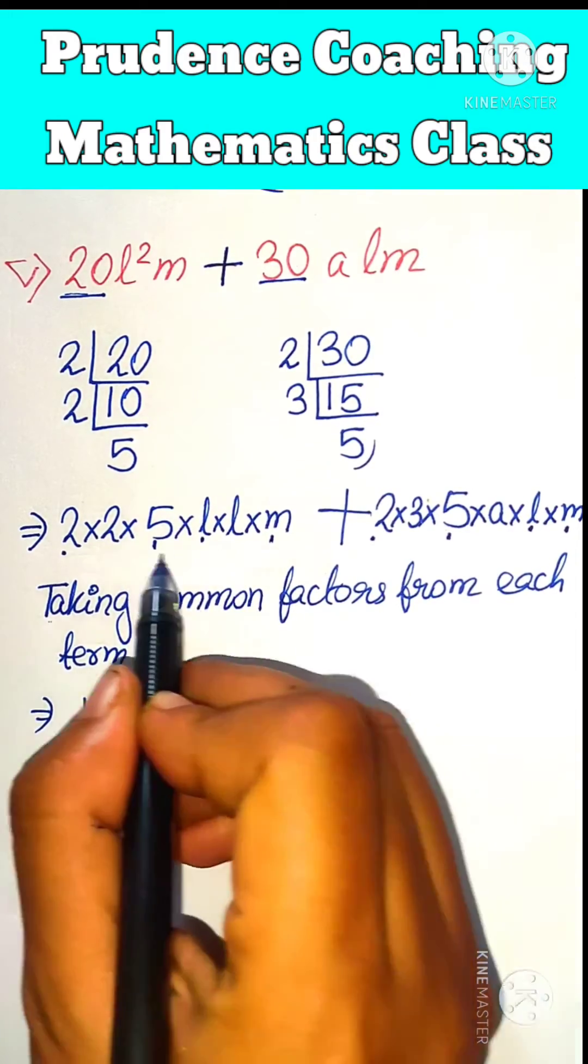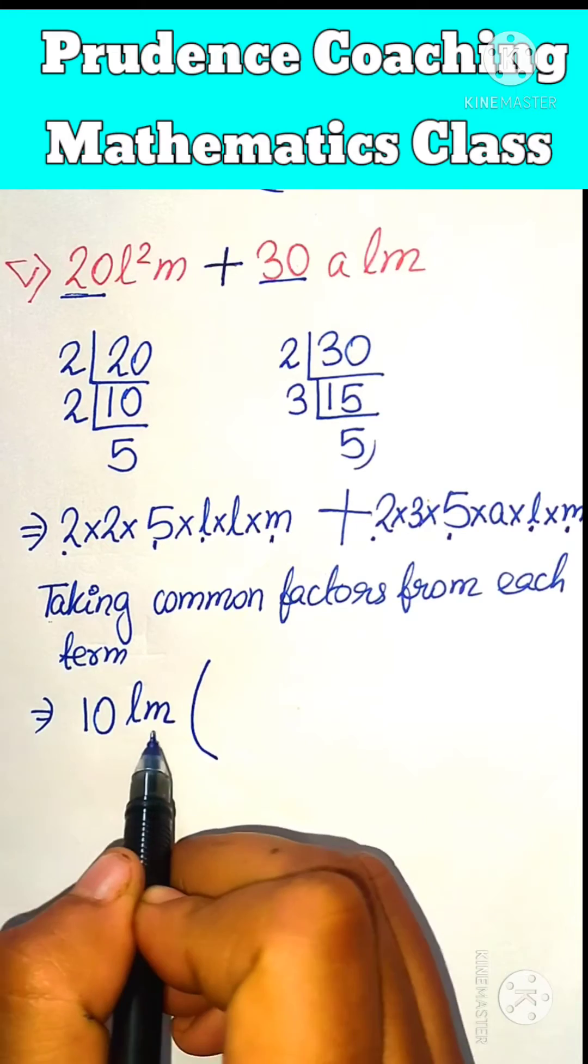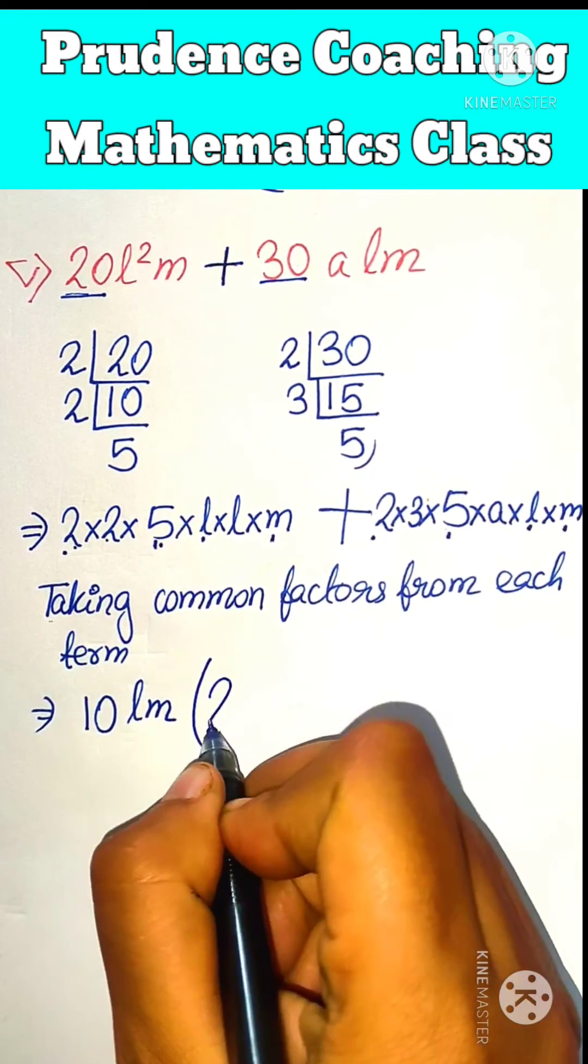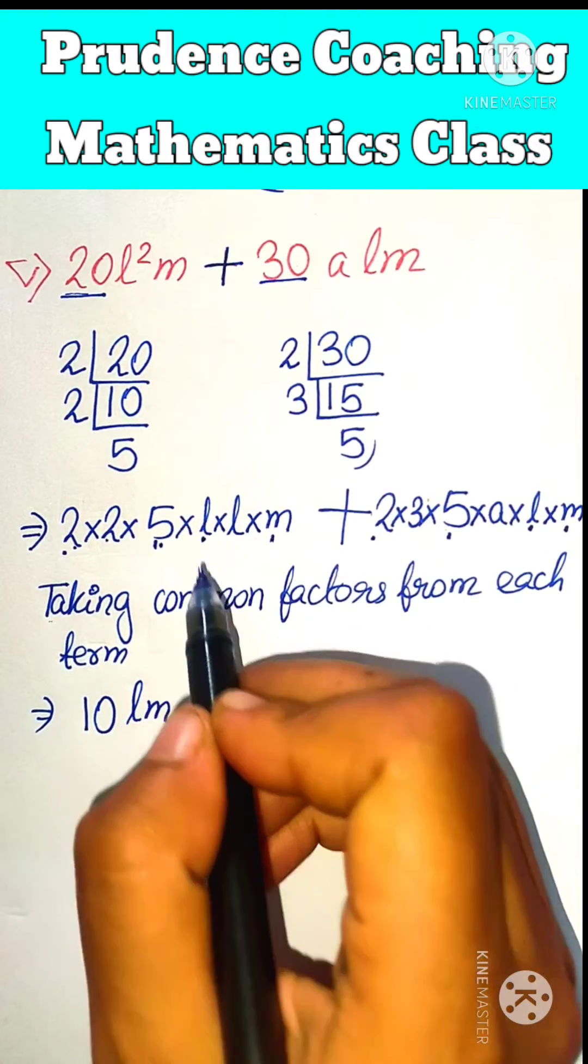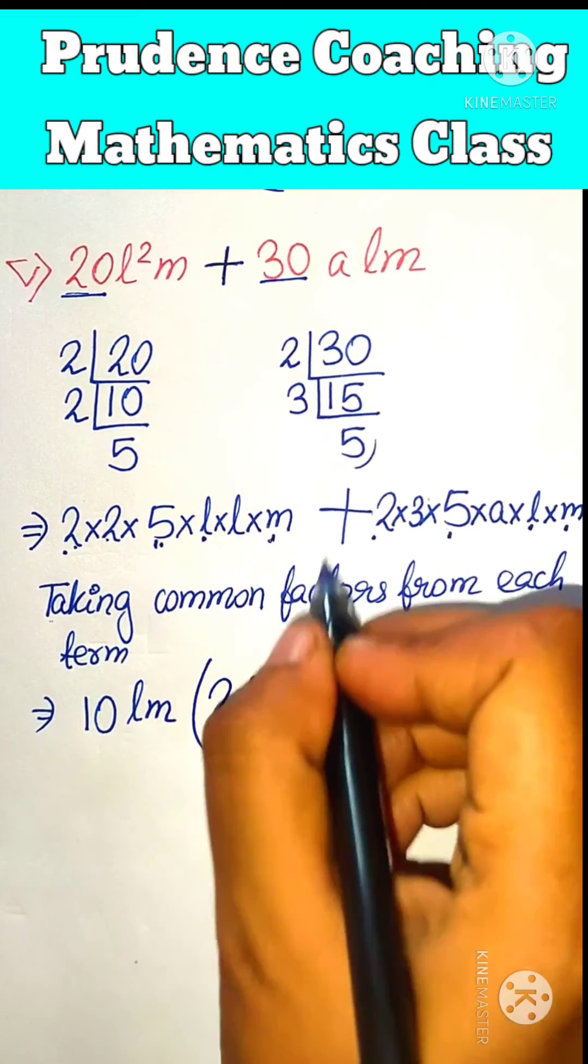Now just look at this. First term, we have taken 10 l m common. So we have taken this 2 and 5, so we are left with this 2. And in case of variable, we have taken l and m, so we are left with another one l.